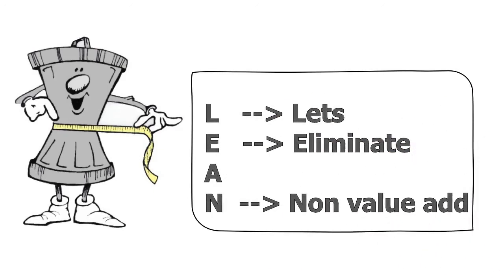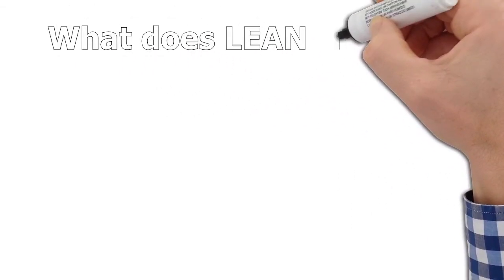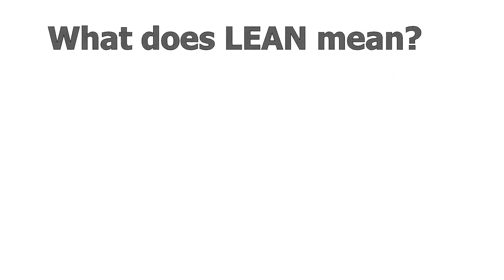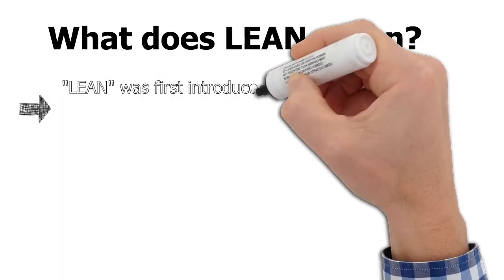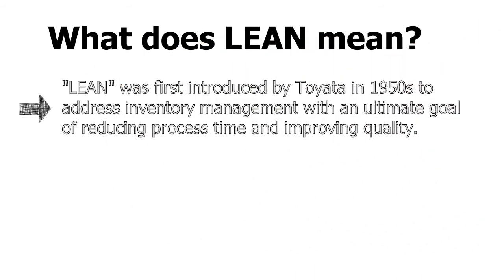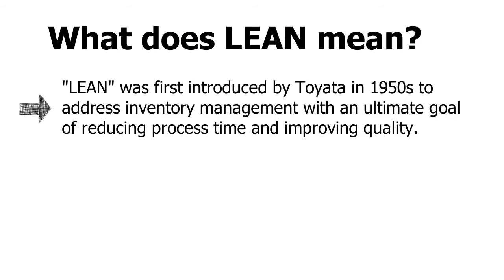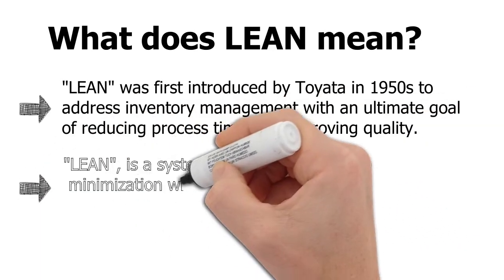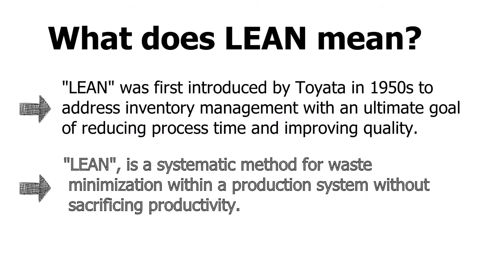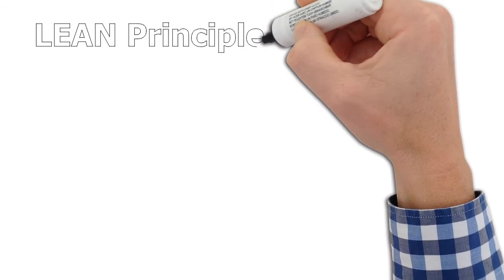Lean is equal to 'let's eliminate non-value add.' What does lean mean? This is a question which most people who don't know about lean would ask. In IT or software development, lean was a concept introduced by Toyota in the 1950s to address inventory management, with an ultimate goal of reducing process time and improving quality. Lean is a systematic method of waste minimization within a production system without sacrificing productivity — that's what most IT organizations are looking for.